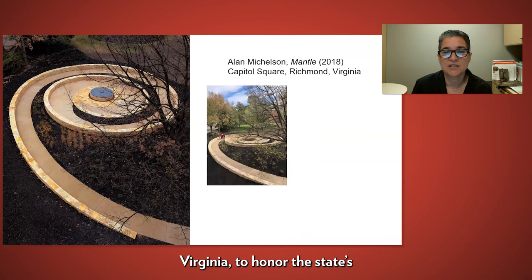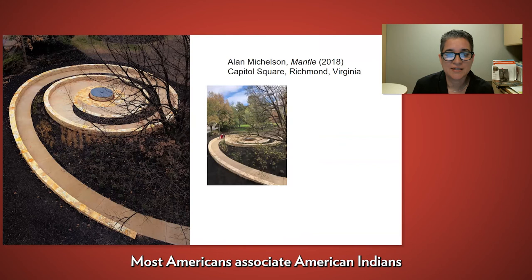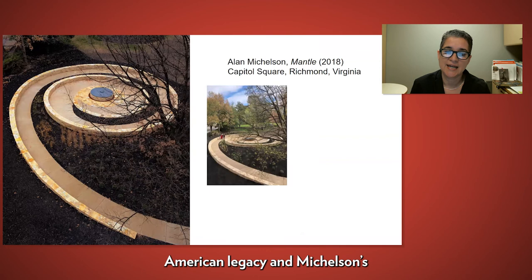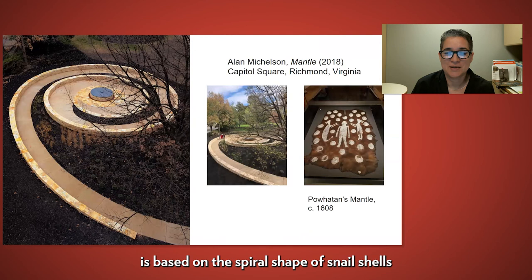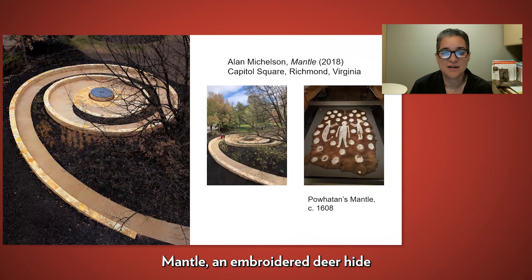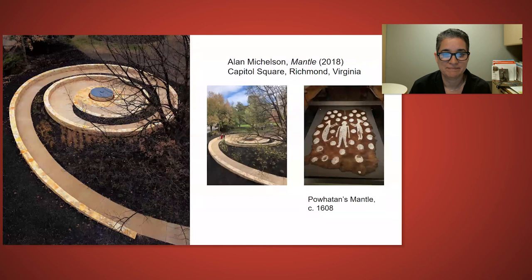Most Americans associate American Indians with the Western and Midwestern states, but the East Coast has a deep Native American legacy. Michelson's monument, titled Mantle, is in an area steeped in colonial history. The spiral design of the monument is based on the spiral shape of snail shells on the historic Powhatan's mantle, an embroidered deerhide believed to have been gifted to England by Chief Powhatan in 1608. Each of the swirling shapes in the design of this heraldic cloak are believed to have represented each of the nations in his confederacy.